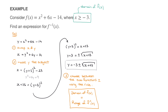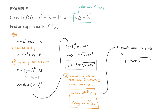Since we have y equals negative 3 plus or minus the square root of x plus 23, the only way this could lead to y values greater than or equal to negative 3 is if we add to the negative 3 we have here. This tells us the function we're after is y equals negative 3 plus the square root of x plus 23. So we must have y greater than or equal to negative 3, therefore y equals negative 3 plus the square root of x plus 23.